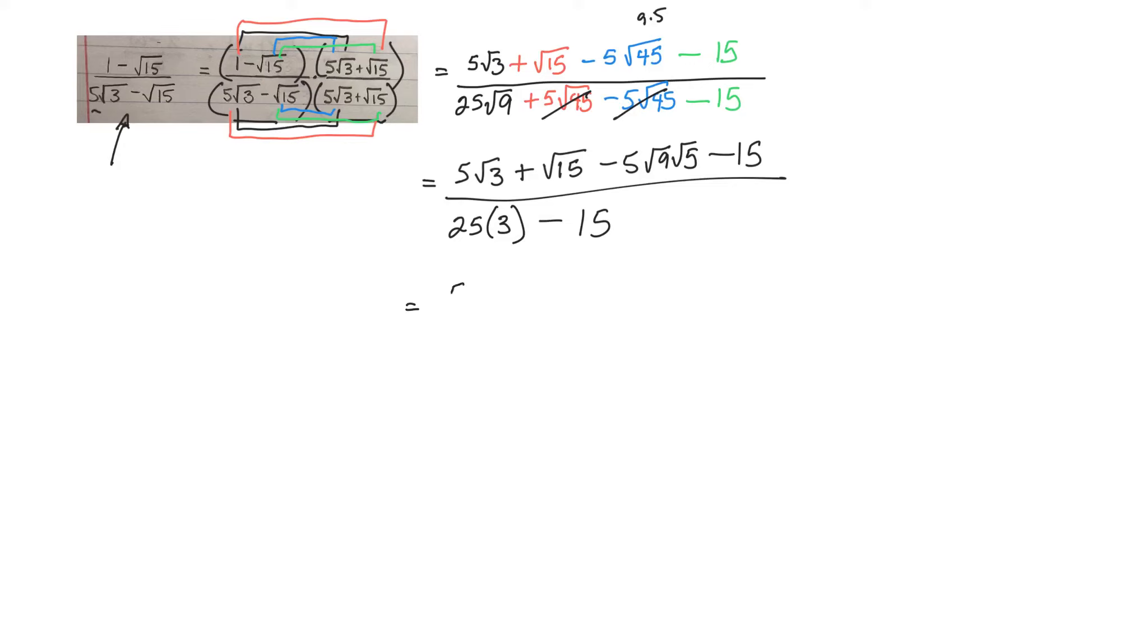A little bit of simplifying up top. 5 root 3, plus root 15. Now square root of 9 is 3. 3 times 5 is 15. So that'll be minus 15 root 5, minus 15, over 25 times 3 is 75.